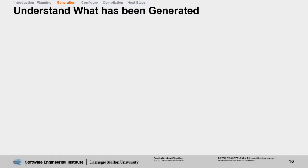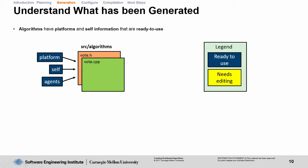Let's talk about what has been generated by the GPC in your vote.h and vote.cpp files. Algorithms have platforms and self-information that are ready to use. They also have methods analyze, plan, and execute that you can implement in any way you see fit. The controller adds this vote algorithm factory into itself so that you can call it later.